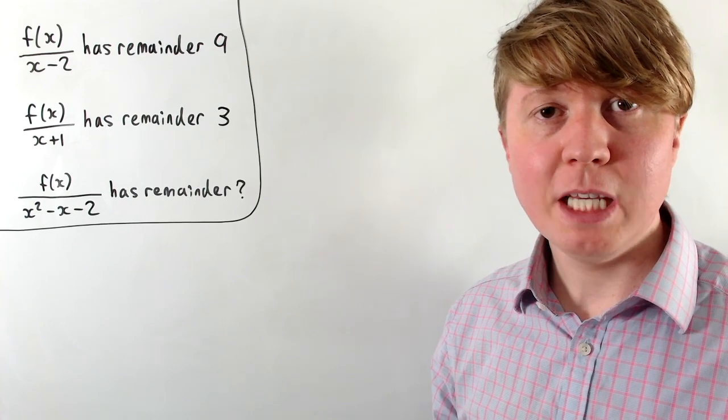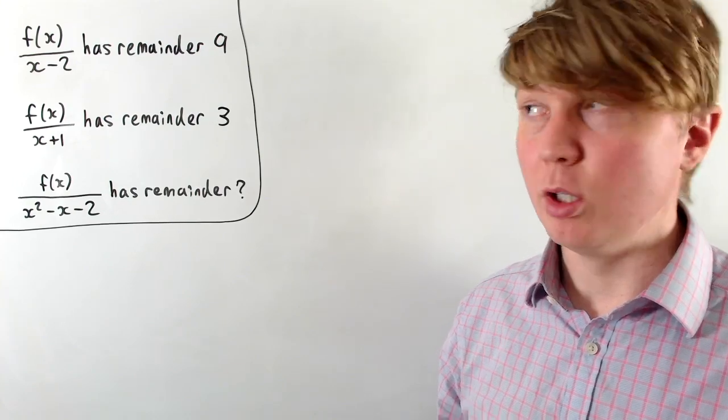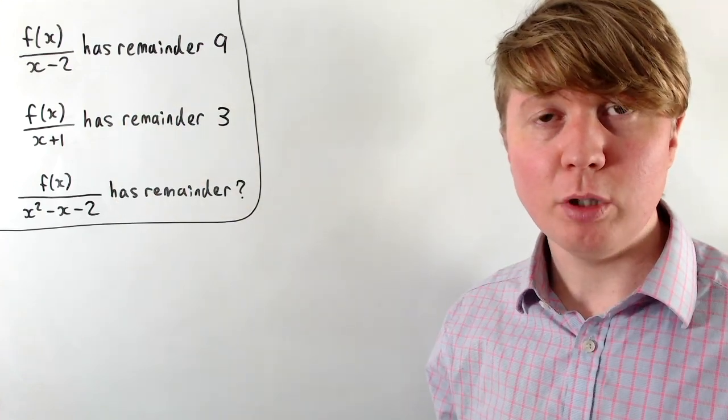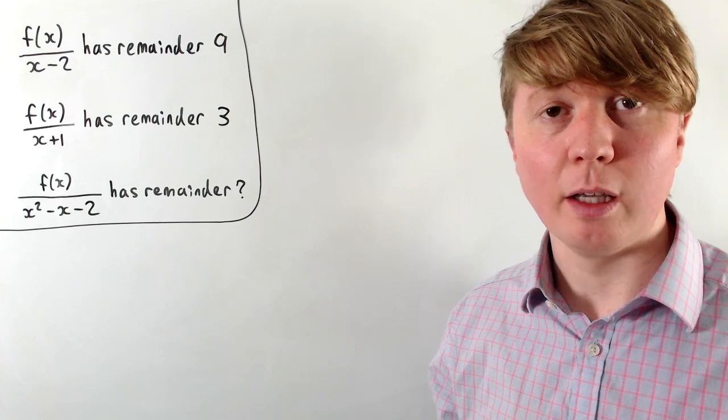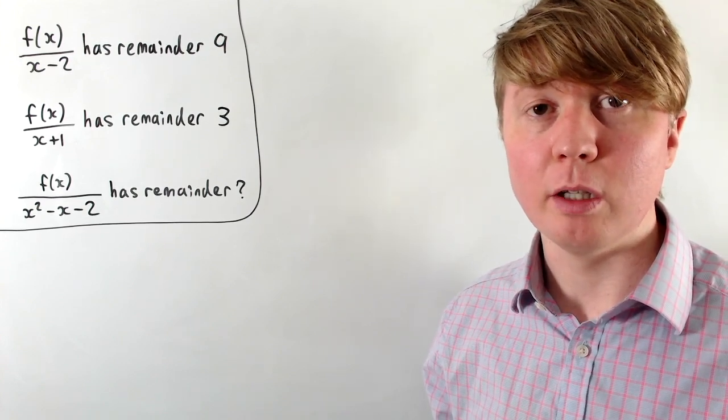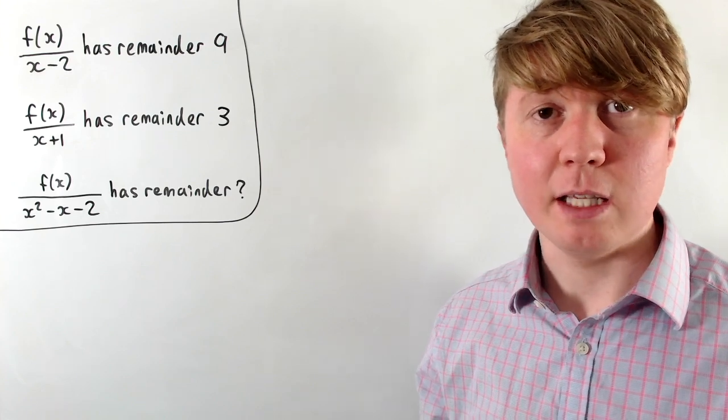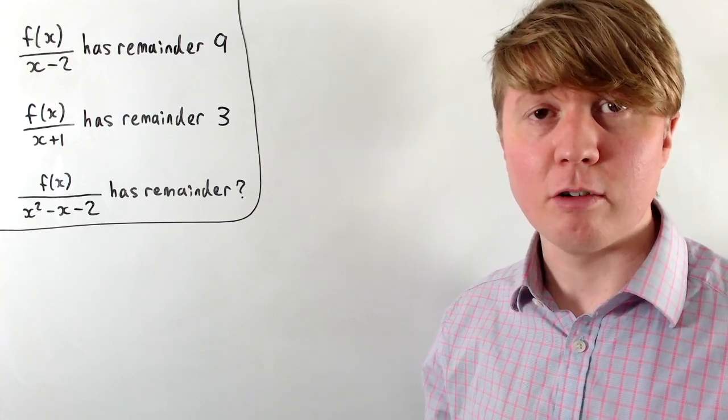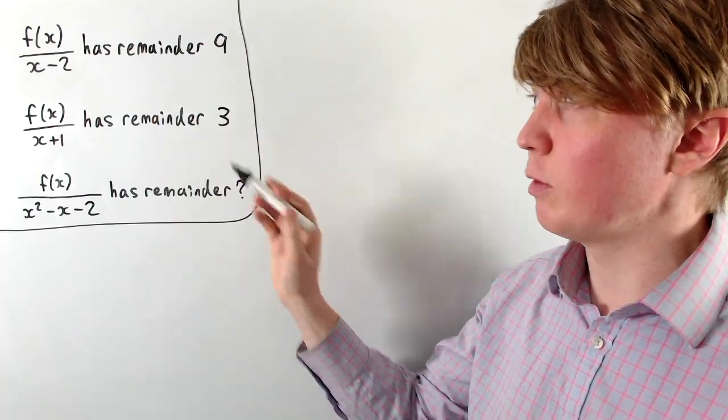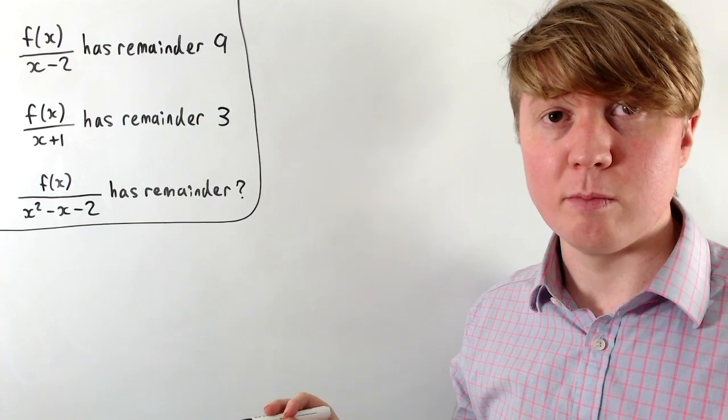We're going to solve this problem about remainders when we divide a polynomial by a linear or a quadratic term. I think this is a really interesting problem because at a glance it doesn't seem like there's enough information to solve this. We certainly can't find out what polynomial f(x) actually is. All we know about f(x) is that it's a real valued polynomial, and we have this information about the remainders when we divide by certain linear terms.